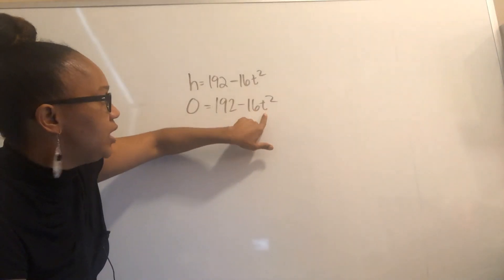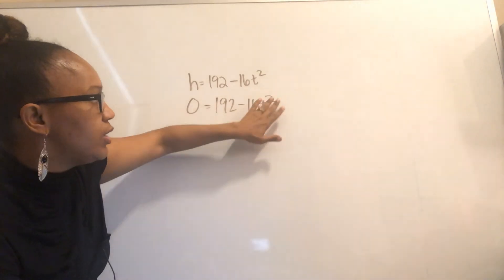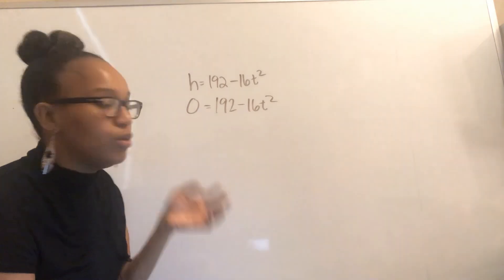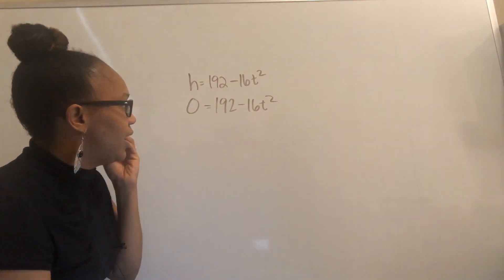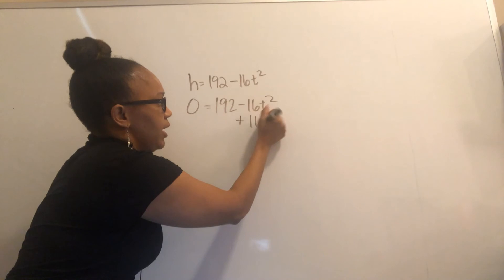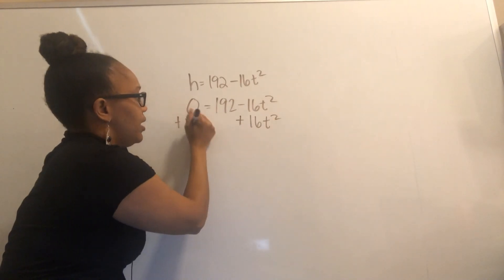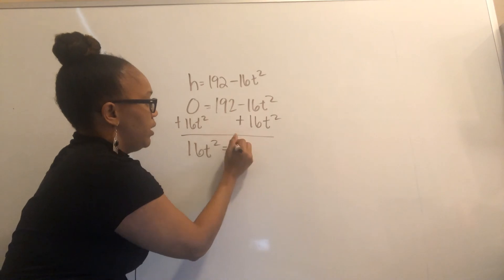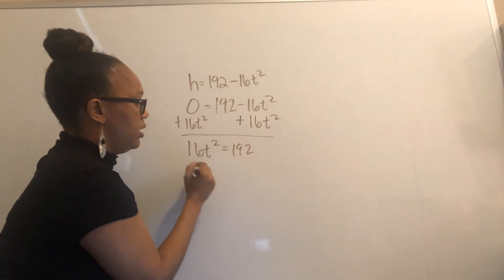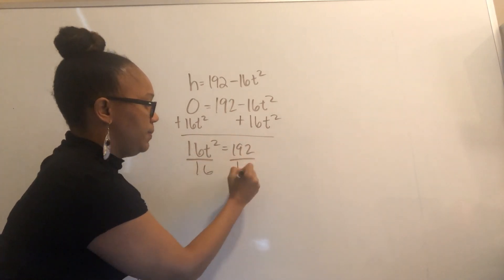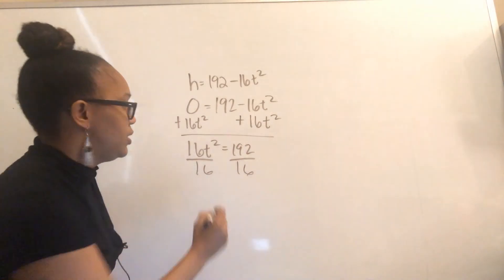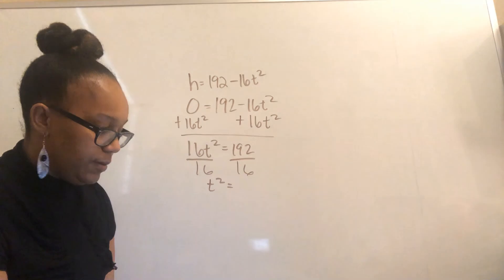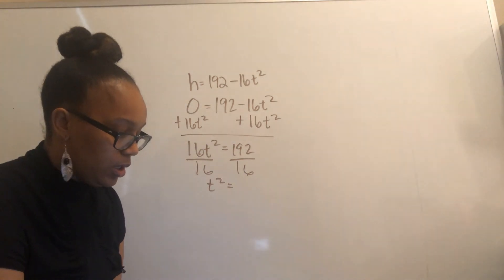Since there is only one T term in the equation, although it is quadratic, we can solve it using the square root property — just isolate T. Add 16T squared to both sides to get 16T squared equals 192. Then divide both sides by 16, and we get T squared equals 192 divided by 16, which is 12.